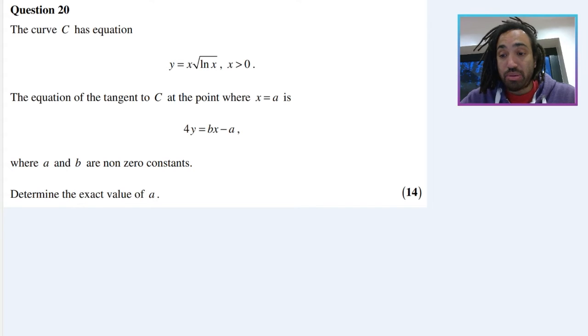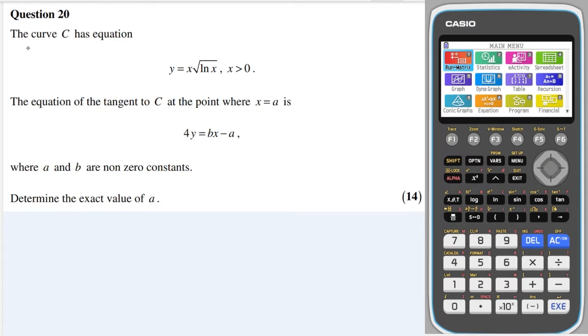OK, let's get into it. The question says we have a curve with this equation, y = x√(ln x), x greater than 0.